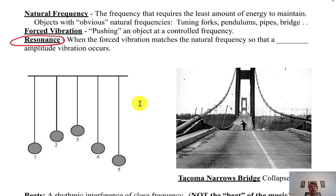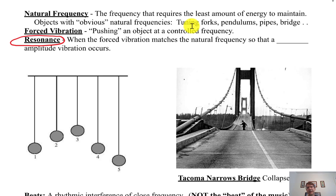Pendulums, pipes, and tuning forks have a natural frequency. If you have a tuning fork that's 256 hertz, whenever you hit it, it's always 256 hertz — that's its natural frequency. There are things that don't really have a natural frequency, like tissue paper, paper in general, blankets, pillows, people. You really want something like a musical instrument. But there are also constructed things like bridges.